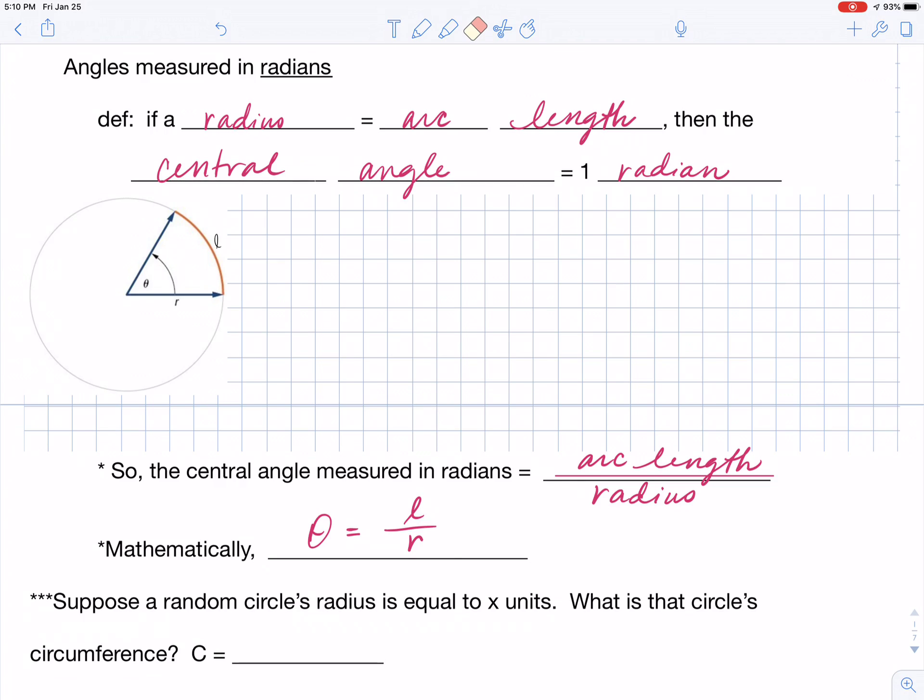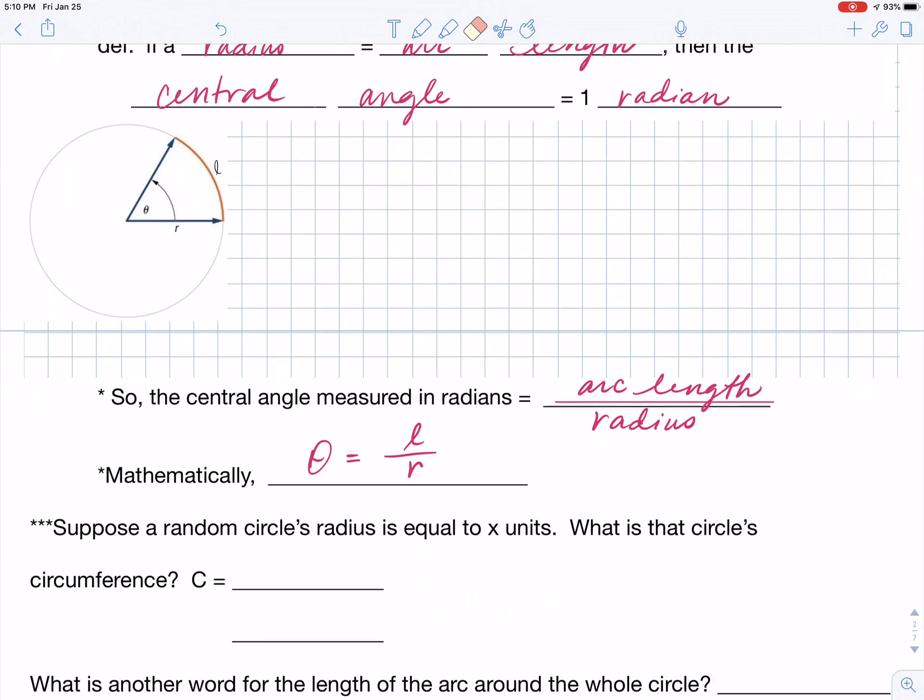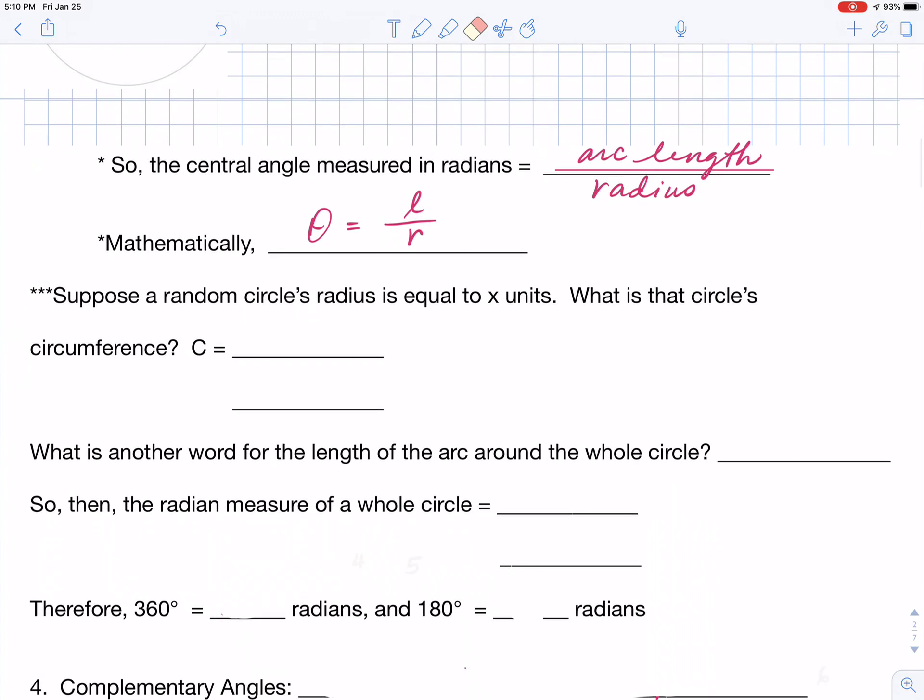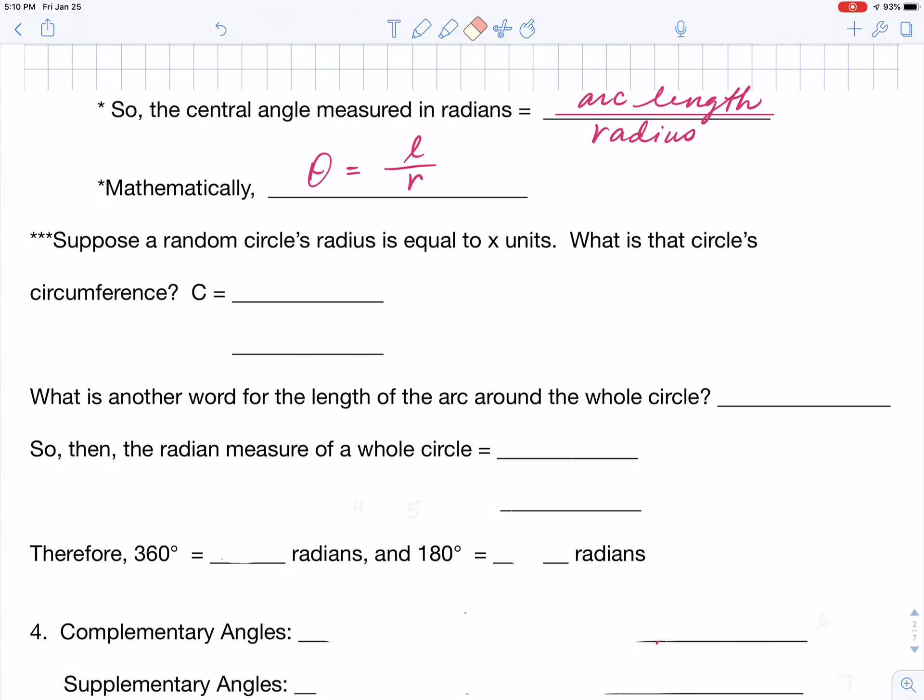So here's your embedded question that I want you to write down the answer to and bring it to class. Suppose a random circle's radius is x units. What is that circle's circumference? Now I haven't gone over circumference with you, so you're going to have to reach back in your mind to high school geometry or look up the formula for circumference.